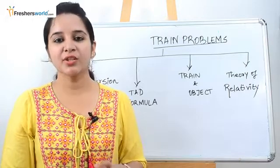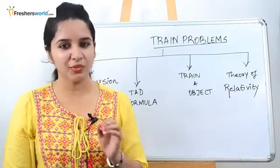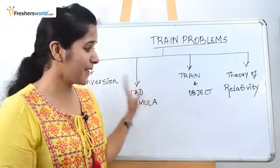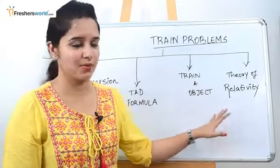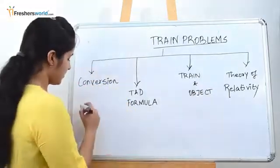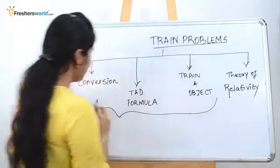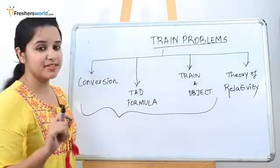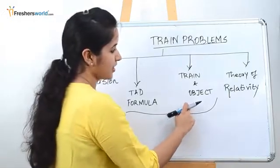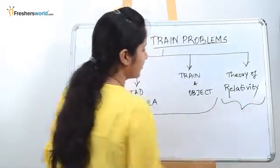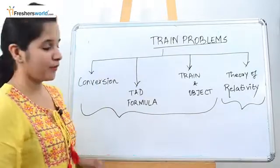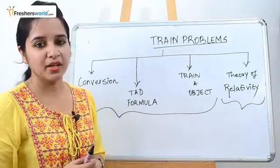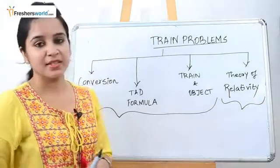Train Problems. Today I will tell you the four types of problems that you need to know. Anything apart from that is not necessary for any exam. These are the basic problems you should definitely know. Type 1 is conversion, type 2 is the time and distance formula, type 3 is train and an object, and type 4 is theory of relativity. In this video we will be covering the first three types of the train problems. In the next video we will be covering the theory of relativity.